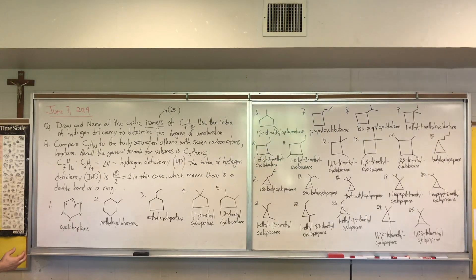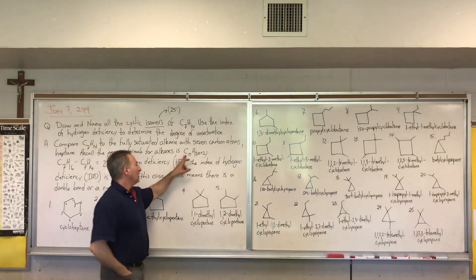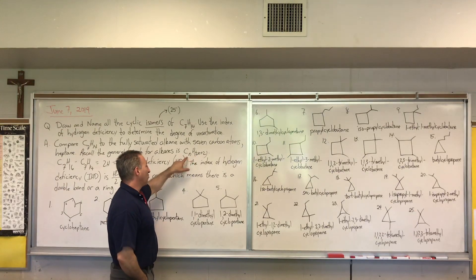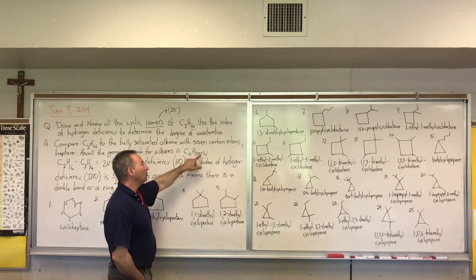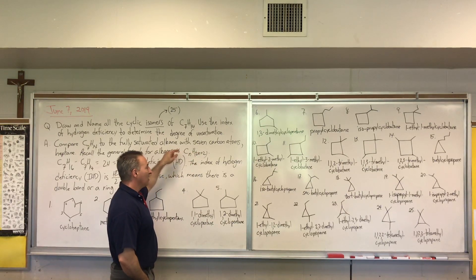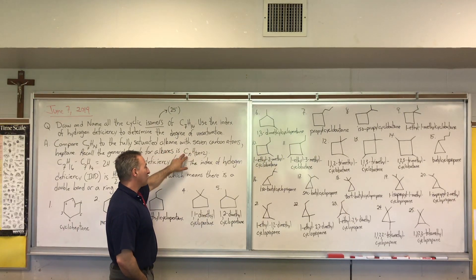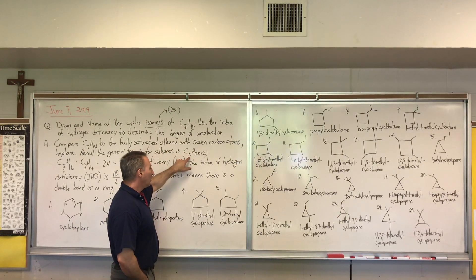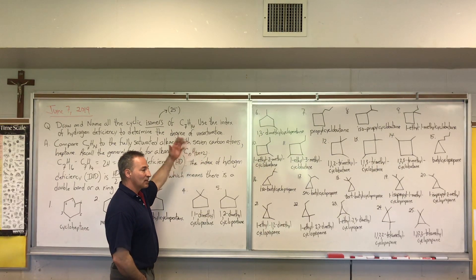So what you do is you compare the C7H14 to the fully saturated alkane that contains 7 carbon atoms, which is heptane. Recall the general formula for alkanes is CnH2n plus 2. So for example if you have one carbon atom, you're going to have twice as many plus 2 or 4 hydrogen atoms. So the formula for methane is CH4. The formula for ethane with 2 carbon atoms is going to be C2 and 2 times 2, 4 plus 2, 6. So C2H6 and so on.